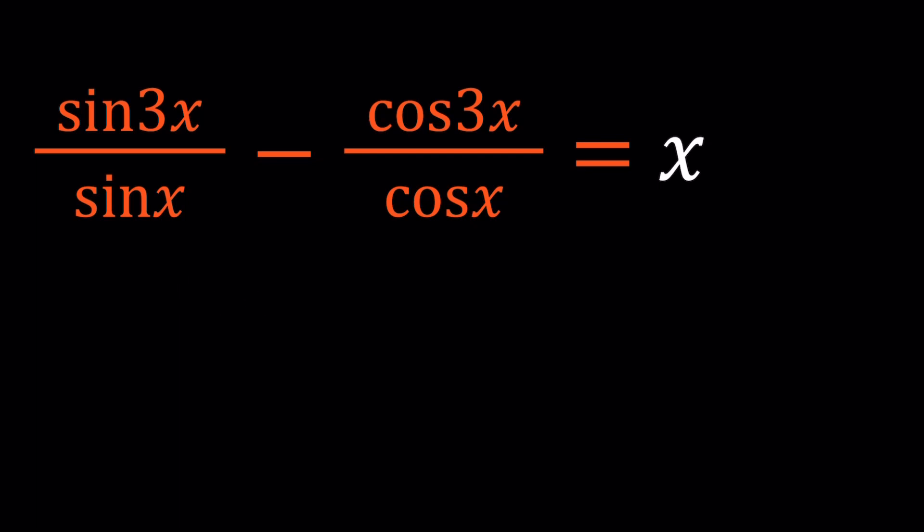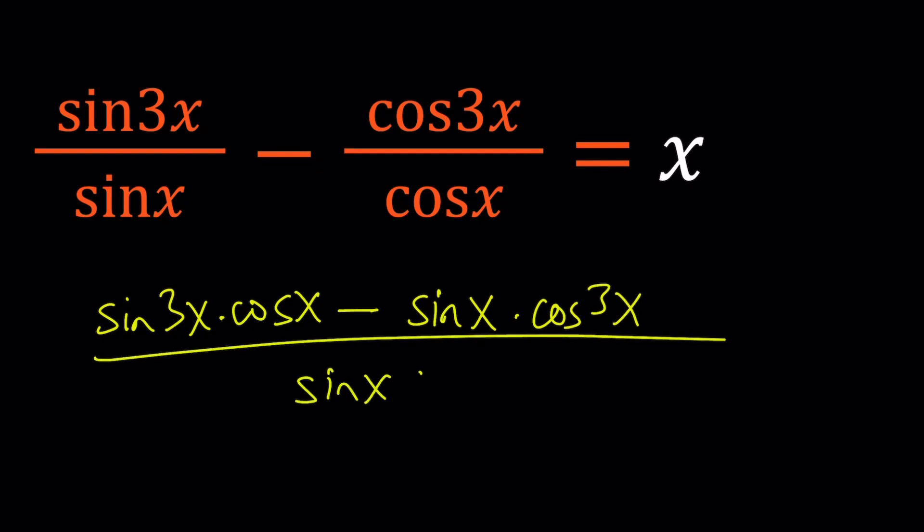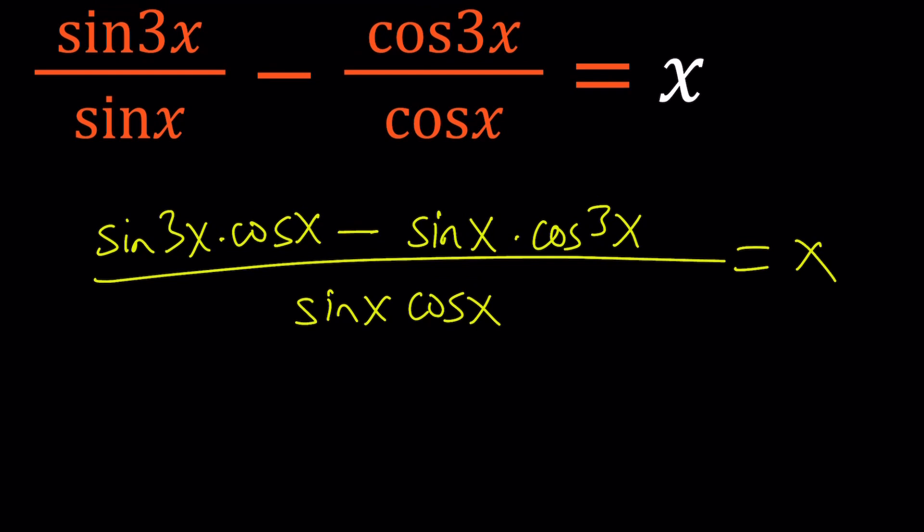Now, when I multiply the first fraction by cosine x, I'm going to get sine 3x times cosine x. And then the second one by sine x, cosine 3x. And I could probably write the sine first. It's going to look better. Sine x multiplied by cosine 3x. And at the bottom, I have my common denominator, which is sine x, cosine x. And that is equal to x. Now, look at the numerator. The top. Take a good look.